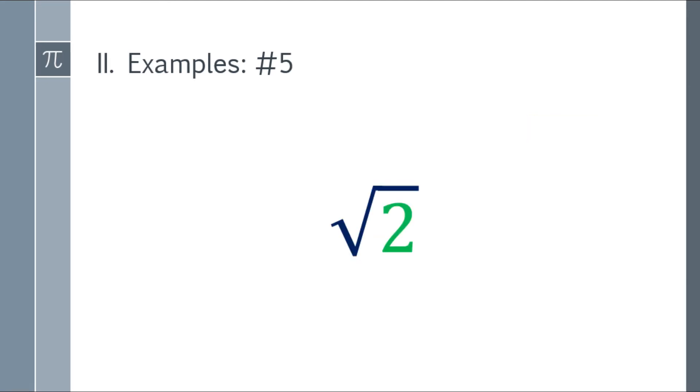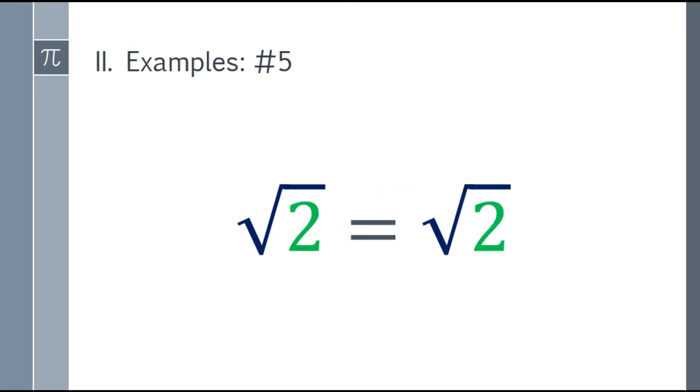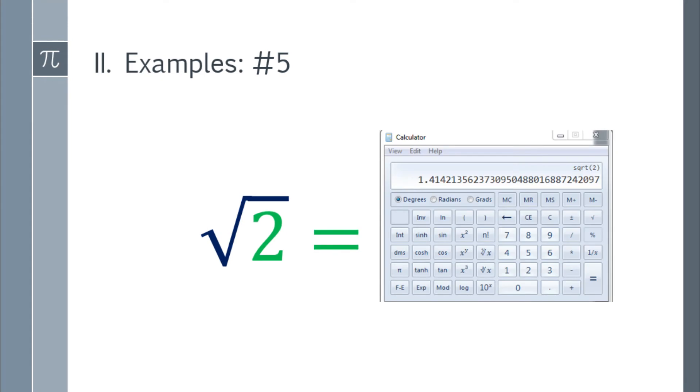Okay, example number 5 tayo. Paano naman kung square root of 2? It's not a perfect square. You may answer it as square root of 2 na rin. Tapos kung gusto nila ng exact answer, kuha ka nila ng calculator and you will have around 1.414.